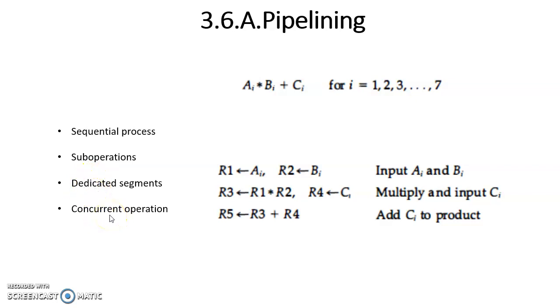Let us understand this pipelining technique with the help of an example: ai * bi + ci for i equal to 1 to 7. That means this operation must be performed 7 times: 1, 2, 3, 4, 5, 6, 7.